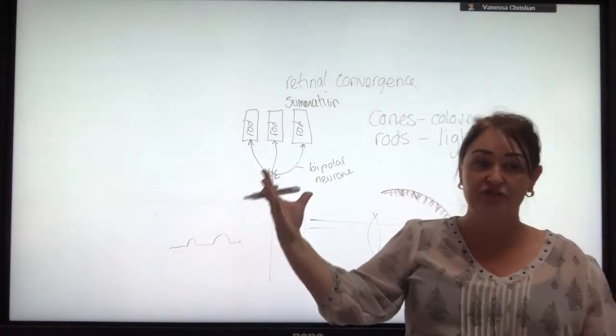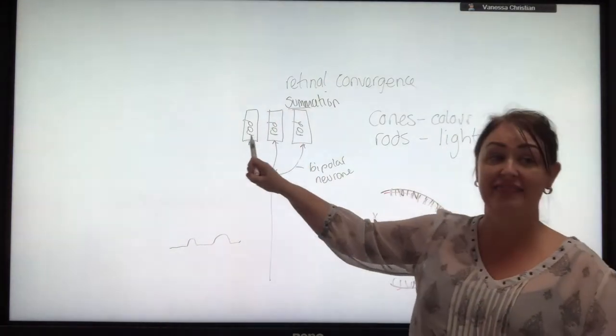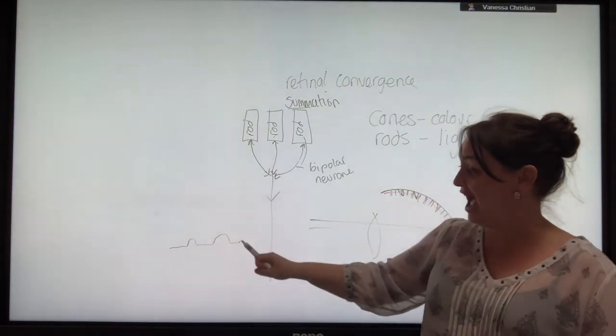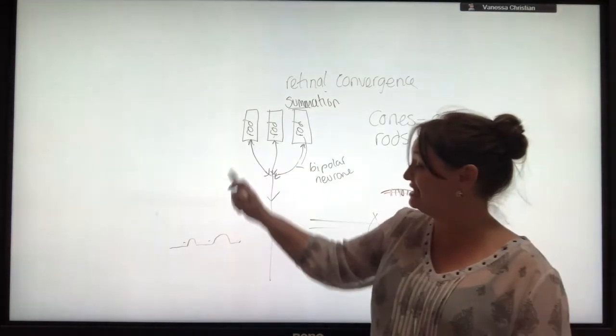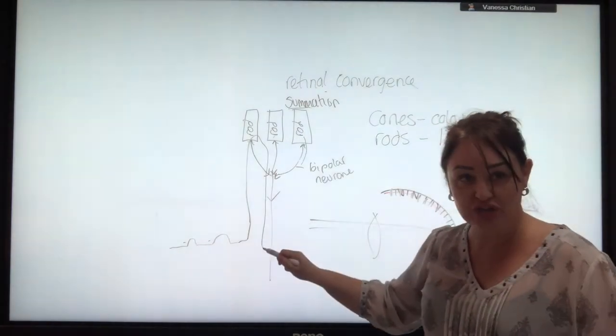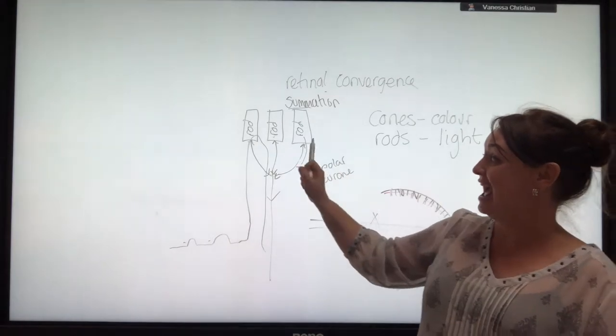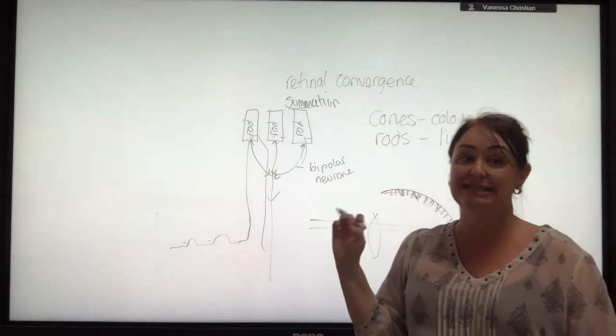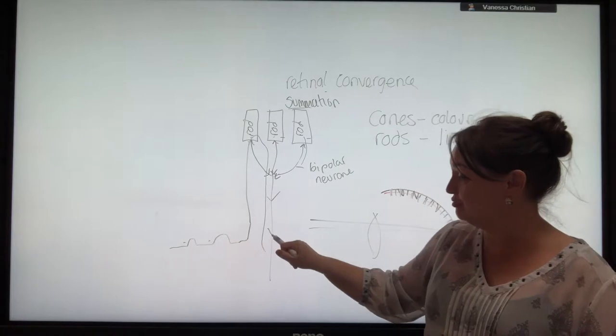What happens here is we have something called summation. It doesn't take a rocket scientist to think, okay, we're adding the impulse from there, the impulse from there, and the impulse from there together. So all of these little ones that might be dismissed elsewhere, because we're adding them together, you're more likely to reach threshold, you're more likely to get your action potential. And because of that, rod cells will be stimulated in dim light. You don't need a huge amount of light to set off an action potential here.